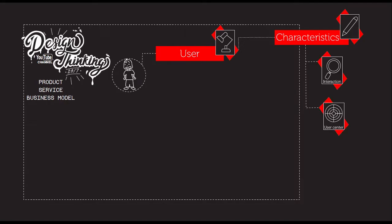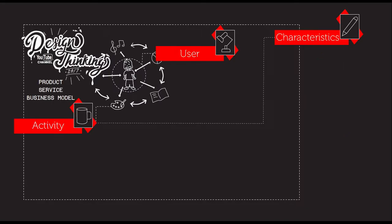What are we looking for? We are looking at the interaction between the user and the product, service, or business model. When we already have that, we start developing the activity. It is really important to see all the different interactions that the user starts to develop when looking at different components, because we never know what could change or what could happen. So it is very important to analyze all those components and all these interactions.